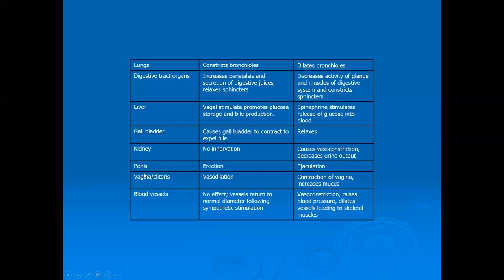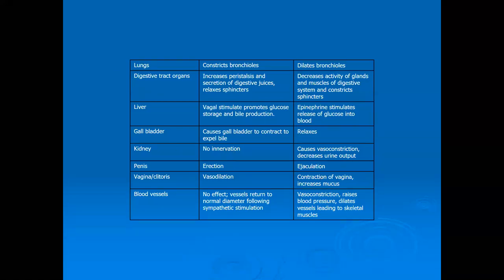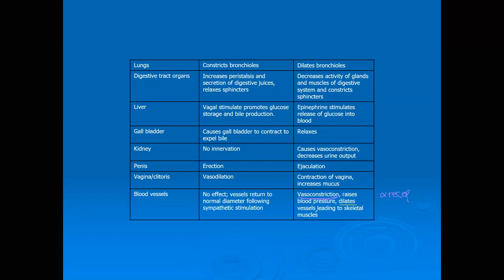In reproduction, sympathetic stimulation of the penis causes ejaculation — the actual release of semen and sperm. In the female reproductive system, the vagina and clitoris contract to move sperm upward into the body, and mucus secretion increases. For blood vessels, there are two different effects depending on receptor type: alpha receptors cause vasoconstriction; beta receptors, such as those on blood vessels feeding skeletal muscles, cause vasodilation.